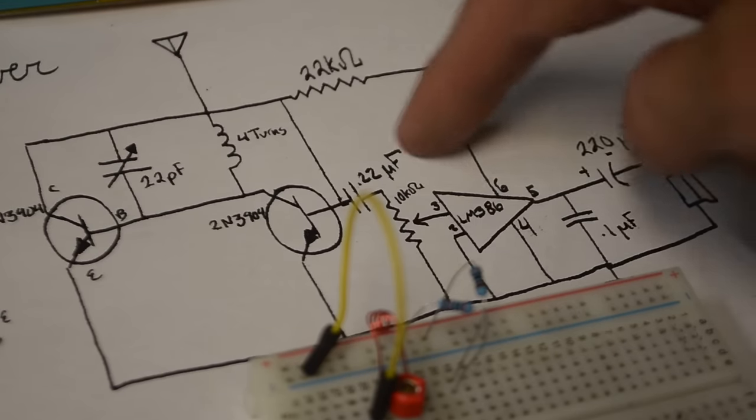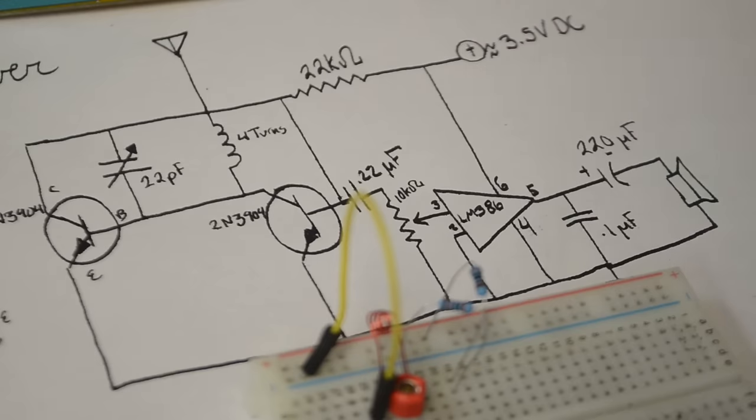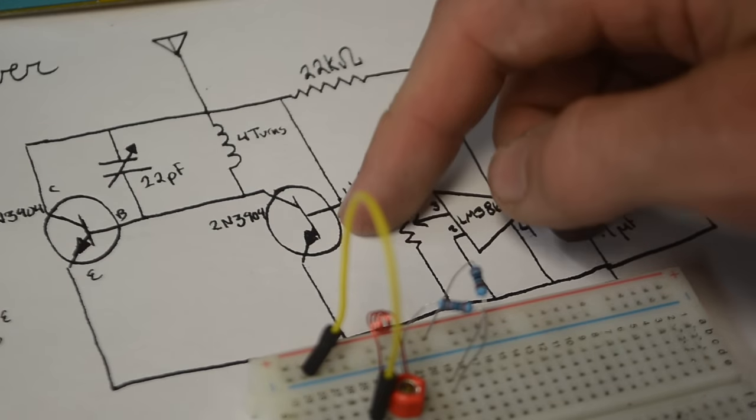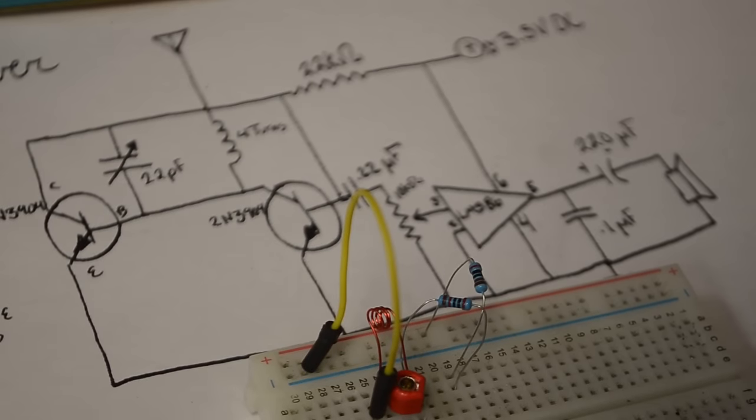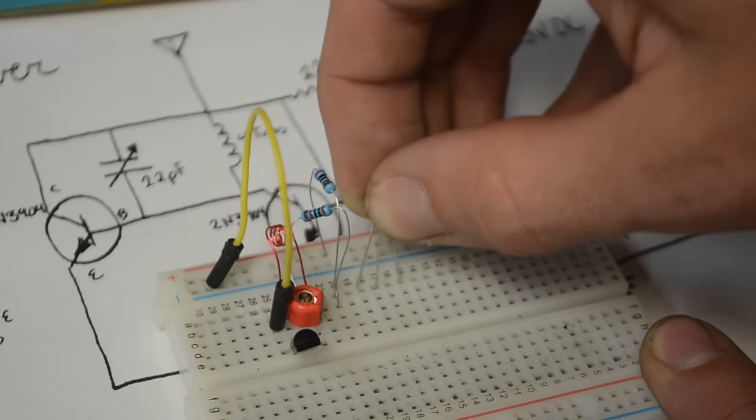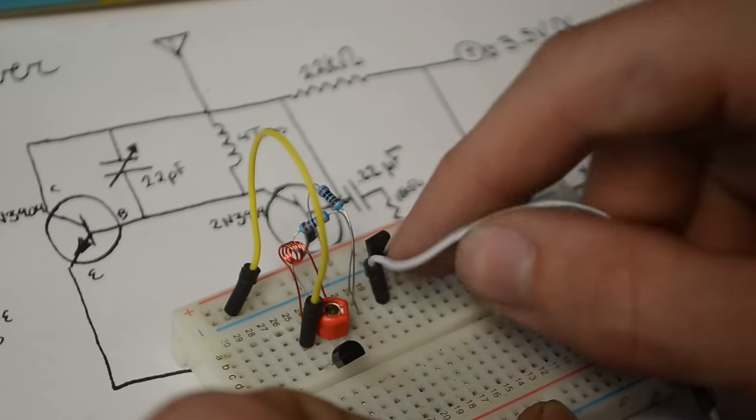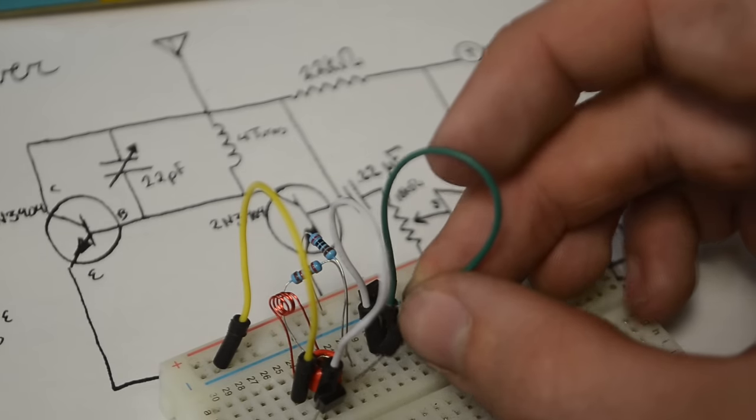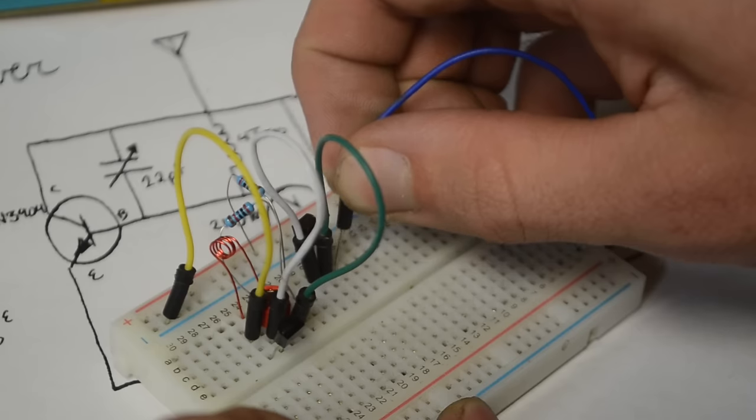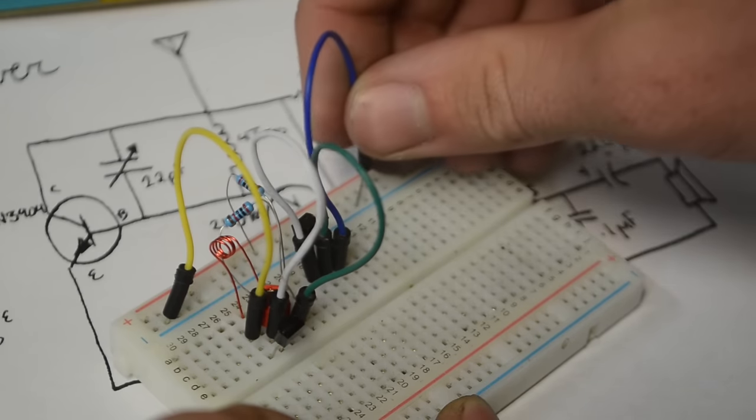For the next transistor, we can see that the collector needs to be connected to the base of the last one, and the base of this transistor needs to be connected to the 22,000 ohm resistor. I'm going to insert this transistor right here. We can take a wire from the collector of this transistor to the base of the last, then a wire from the base to the collector and 22,000 ohm resistor of the last one, and one final wire from the emitter to the ground rail.